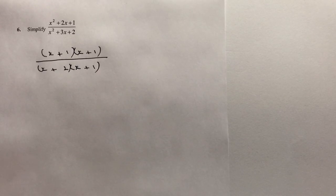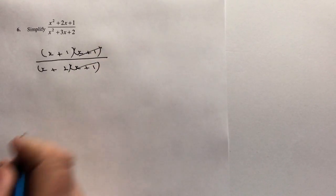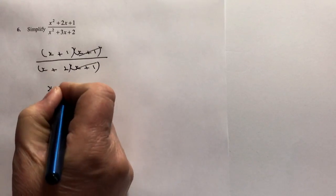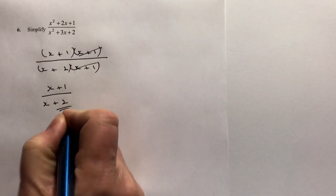That gives me the ability to divide through by x plus 1 top and bottom, and then I get left with x plus 1 at the top and x plus 2 at the bottom.